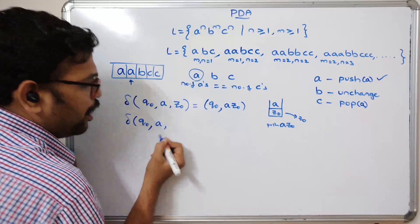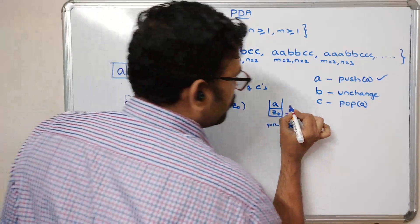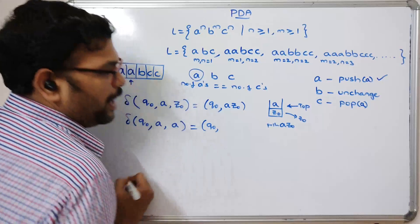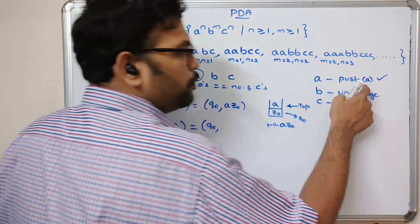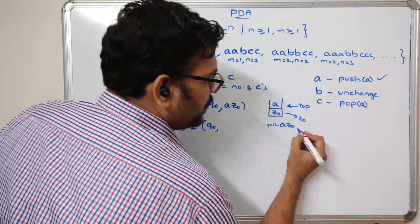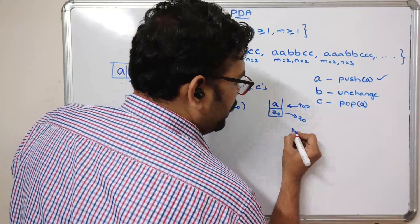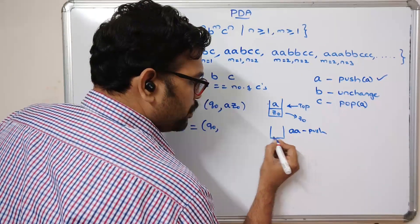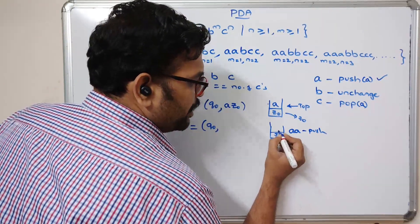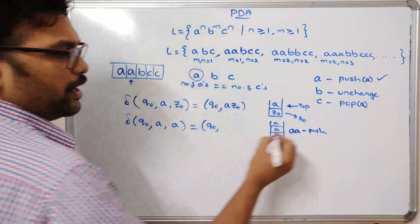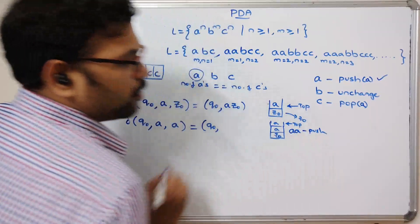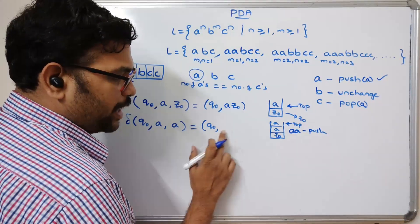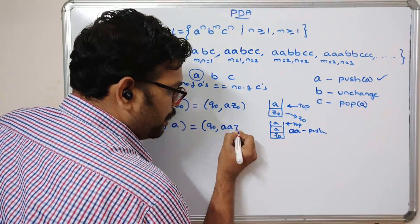Next, delta(q0, a, a): the state remains q0, and the top of the stack is 'a'. We need to push again, so we remove 'a' and push 'aa'. The stack now contains 'aaZ0' from bottom to top, with 'a' at the top.